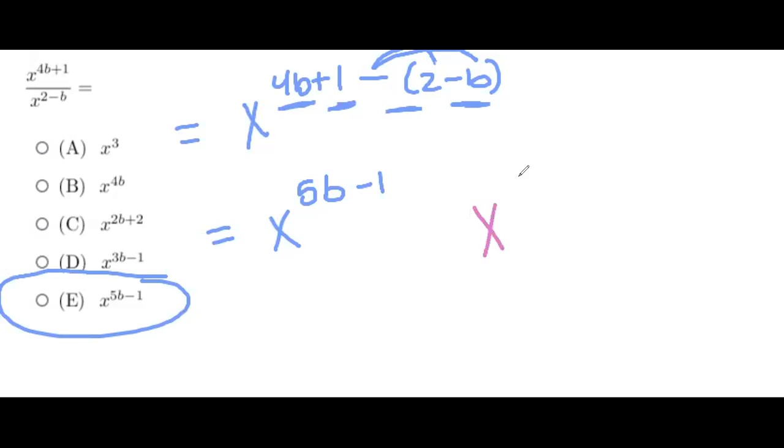Let's say we have x to the 3b plus 1 times x to the 2. So here the rule is not to subtract like we did before. Here we're actually going to add the exponents. So this would be equal to x to the 3b plus 1 plus 2, which is just equal to x to the 3b plus 3.